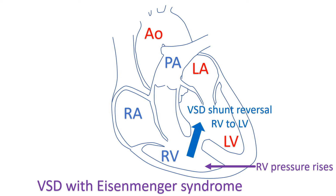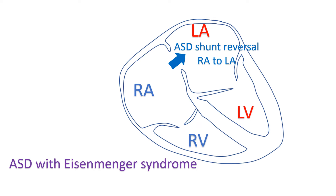Similarly, when the right ventricular pressure rises above that in the left ventricle, the flow across the ventricular septal defect reverses. Blood flows from the right ventricle to the left ventricle. Eisenmenger VSD causes uniform central cyanosis. In both VSD and PDA, the pulmonary pressure can rise up to the level of systemic pressures but not beyond, because of the unrestrictive communication. Similar reversal can also occur across the ASD so that blood flows from right atrium to left atrium. All these right-to-left shunts due to pulmonary hypertension are called Eisenmenger syndrome.